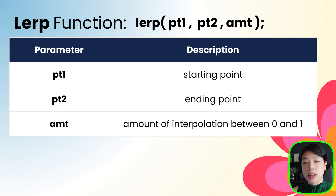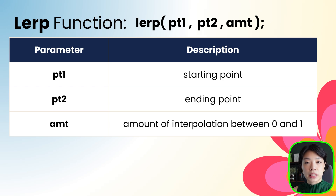Let's start by using a function called lerp, which is a built-in function within p5.js that allows us to do linear interpolation more easily. The lerp function takes in a total of three arguments. The first two arguments are the two known values, and the third argument is the amount of interpolation, which ranges between 0 and 1.